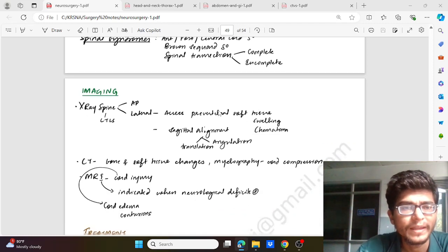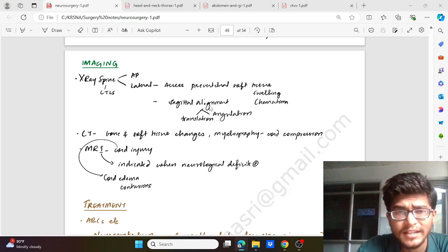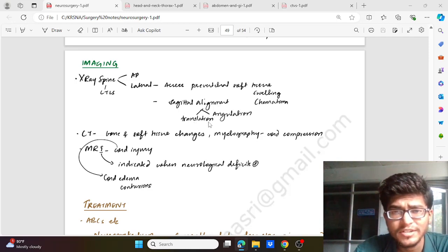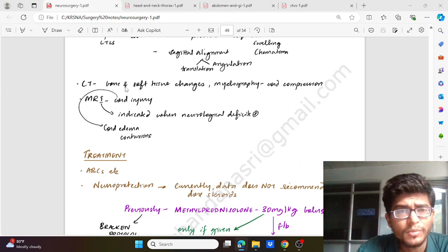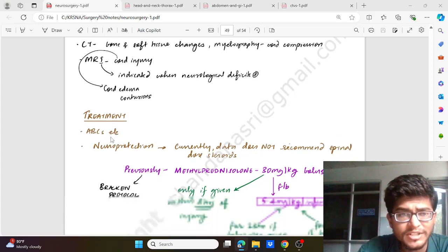Coming to the imaging part: X-ray spine which could be AP and lateral. In the lateral, we will assess the pre-vertebral soft tissue swelling due to any hematoma. In sagittal alignment, we can see for translation or angulation. CT will be showing bone and soft tissue changes. Myelography will show cord compression. MRI will show cord injury, which is indicated when there is some neurological deficit. MRI will also show cord edema and contusion which are the initial aspects of the injury.